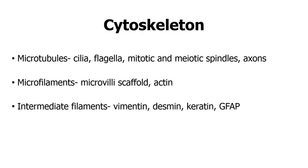The intermediate filaments are found in the four basic tissues: vimentin, desmin, keratin, and glial fibrillary acidic protein. Vimentin is found in connective tissue, desmin in muscle tissue, keratin in epithelial tissue, and GFAP in nervous tissue. The microvilli scaffold makes up the framework for the finger-like projections from the intestinal mucosa known as microvilli, which are involved in absorption of nutrients. Actin is involved in muscle contraction.